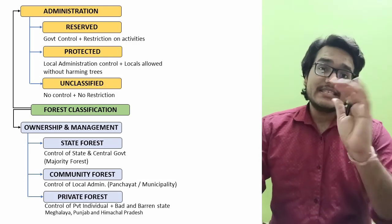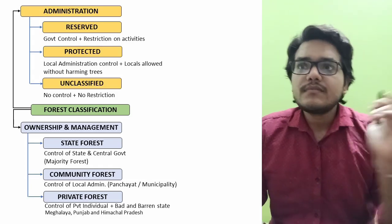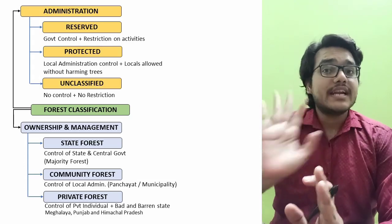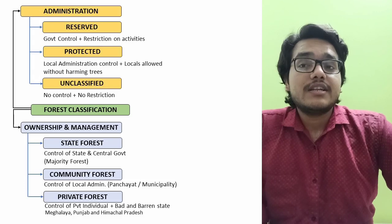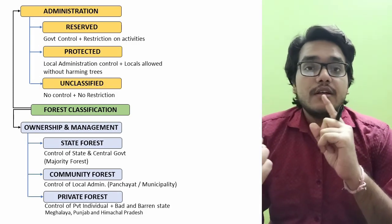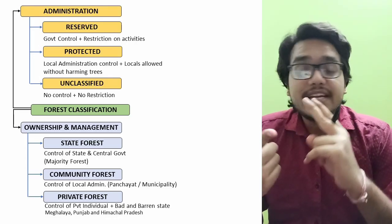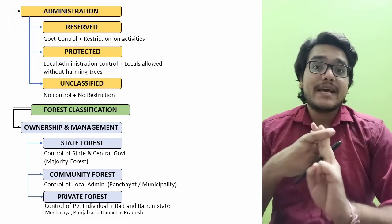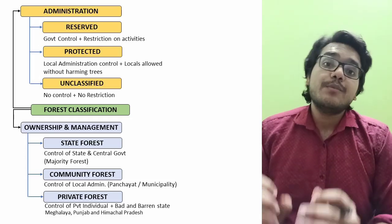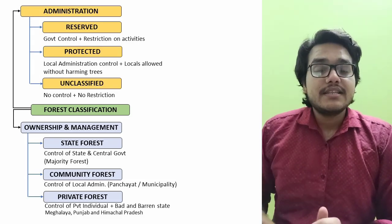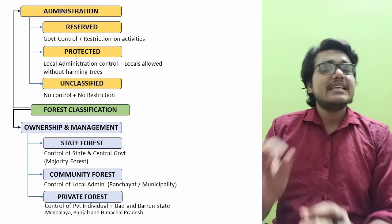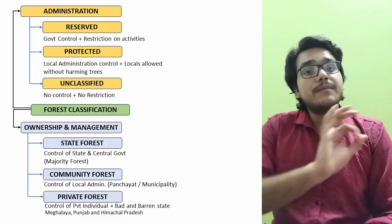Now we come to administration-based classification. First is reserve forest, where we have to literally protect everything. No human activity is permitted here — you cannot take firewood, cut trees, or use grazing grounds. The government controls this entirely. These areas need protection because they may contain extinct species of animals, and the habitat must be protected from any local or outside interference.